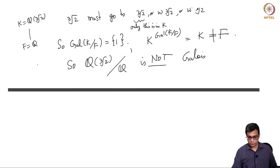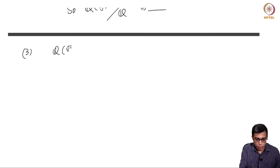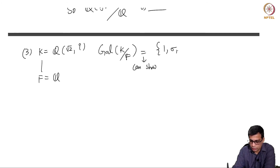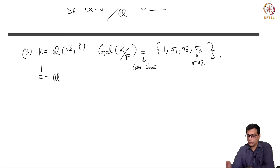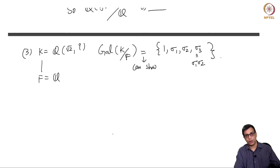One more example: K = Q(√2, i) and F = Q. One can show — using the notation from an earlier video — that we have four automorphisms of K: the identity, σ₁ (sending √2 → √2, i → −i), σ₂ (sending √2 → −√2, i → i), and σ₃ = σ₁σ₂.